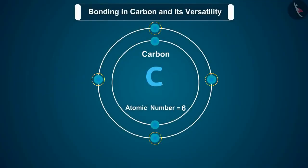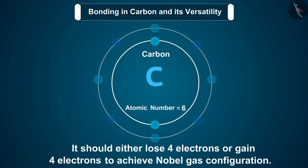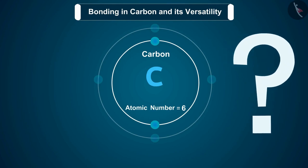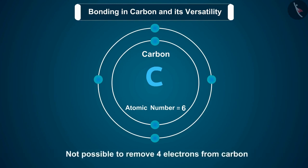Carbon has 4 electrons in its outermost shell, so it should either lose 4 electrons or gain 4 electrons to achieve noble gas configuration. But is it possible? As carbon is a small atom, its outermost electrons are held strongly by the nucleus. So it is not possible to remove 4 electrons from carbon.